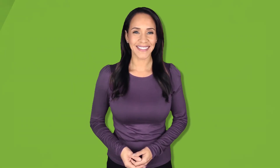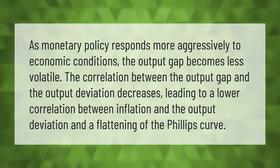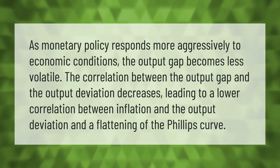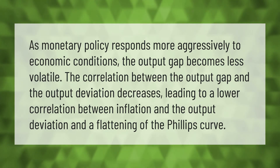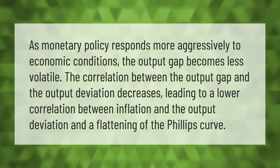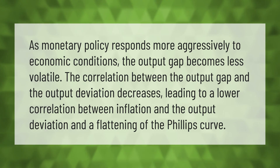As monetary policy responds more aggressively to economic conditions, the output gap becomes less volatile. The correlation between the output gap and the output deviation decreases, leading to a lower correlation between inflation and the output deviation, and a flattening of the Phillips Curve.